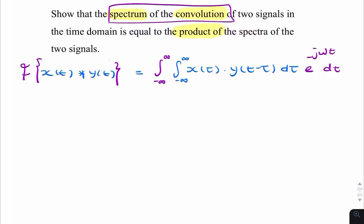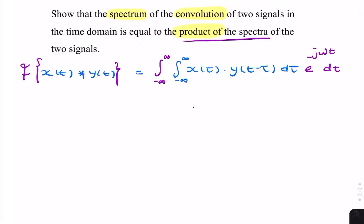We want to show that in the end this is equal to the product of the spectra — something that looks like X(ω) times Y(ω). Each of these is a spectrum, and the multiplication represents the product. That's what we're trying to show.